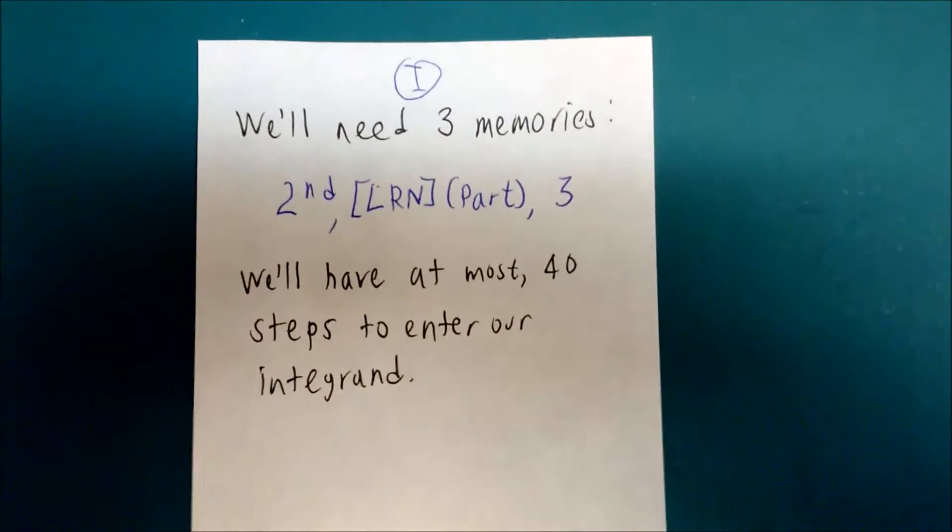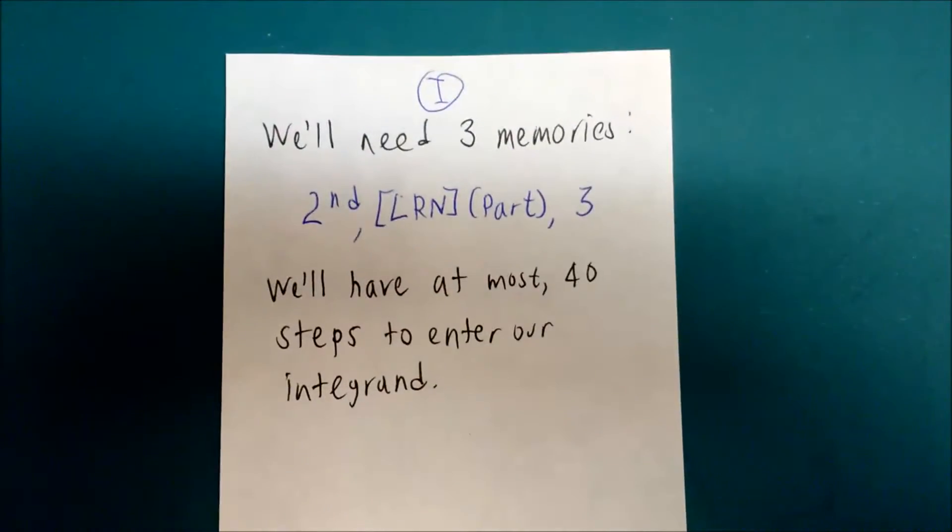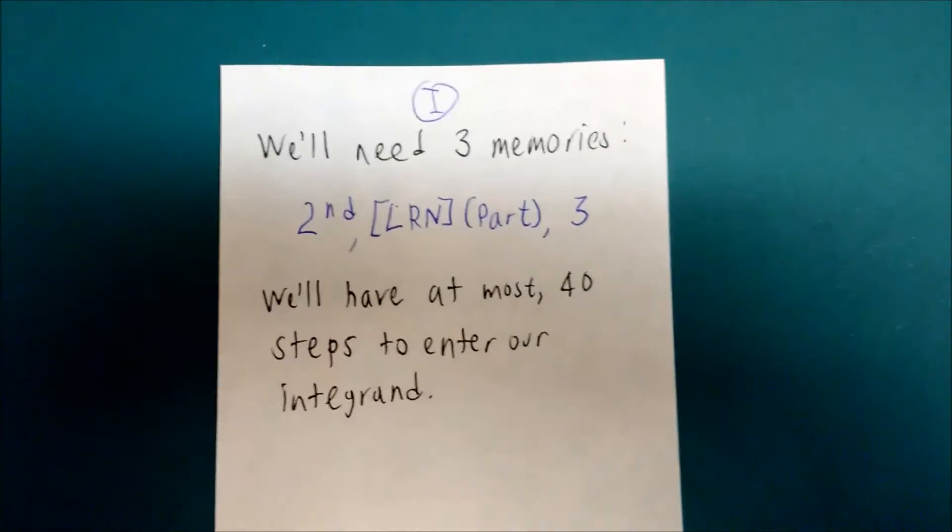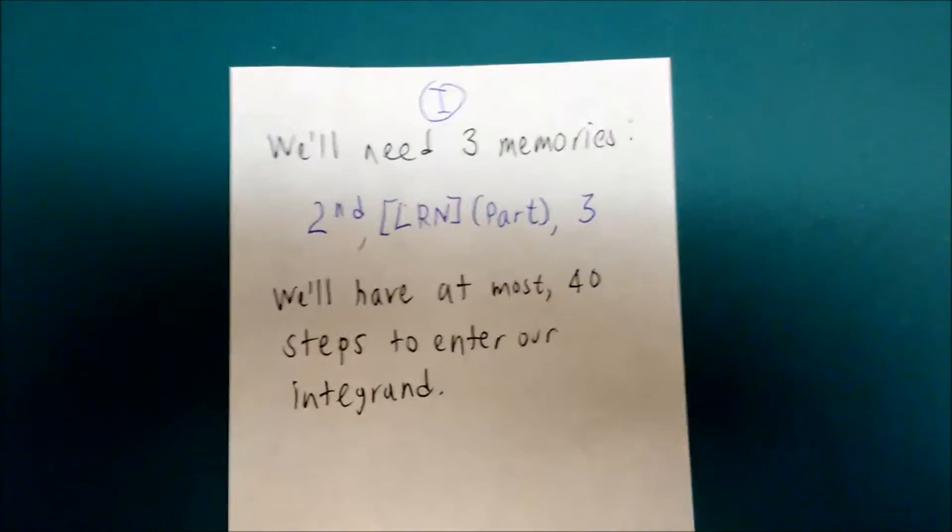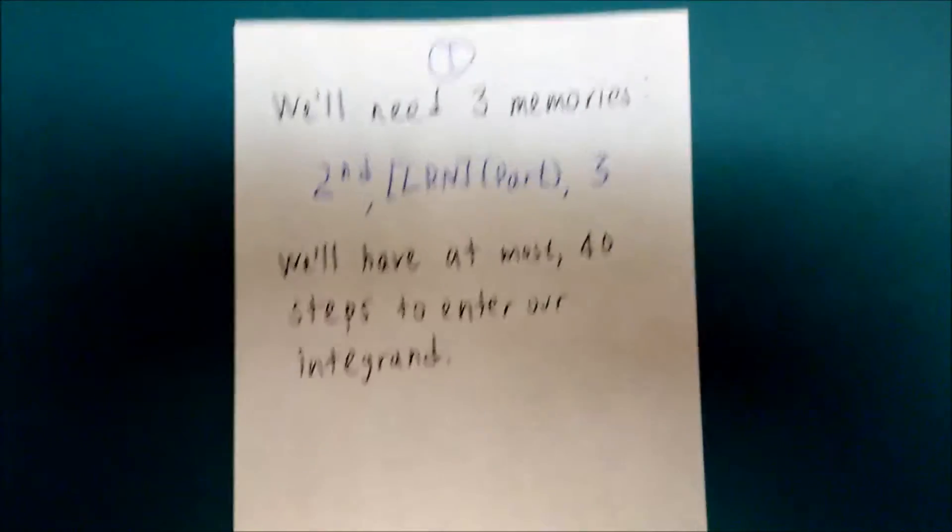Step one is we're going to need to partition the calculator so we have at least three registers. We do that by pressing 2nd, learn, which becomes the partition command, and then 3. You'll need at least 3. At most, we'll have 40 steps to enter our integrand.